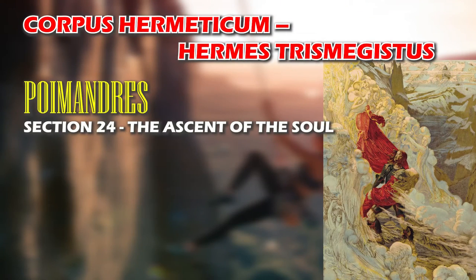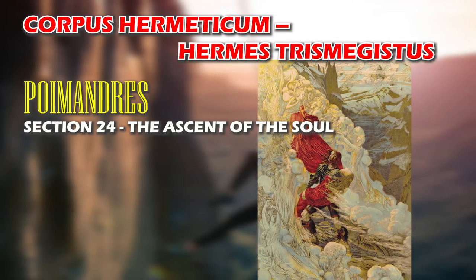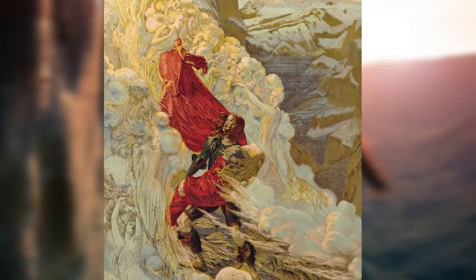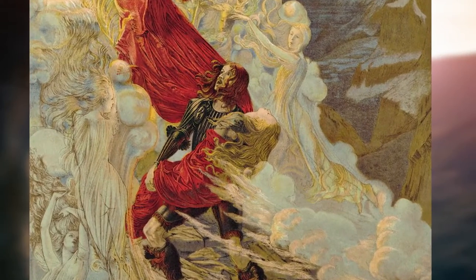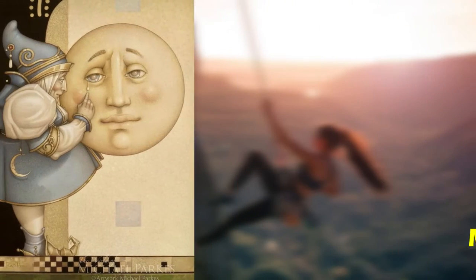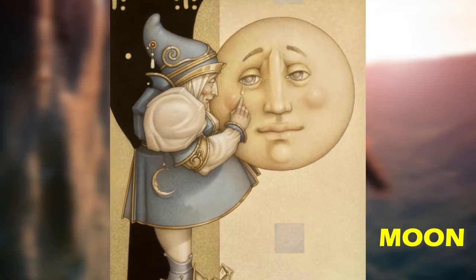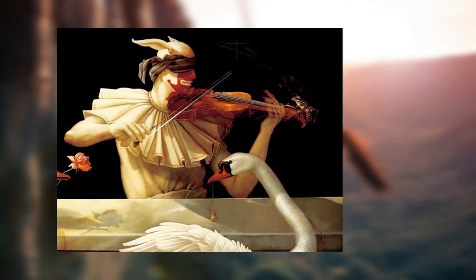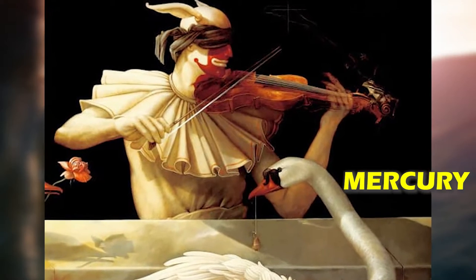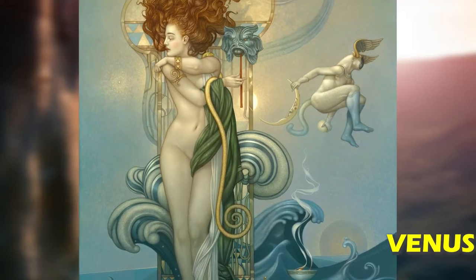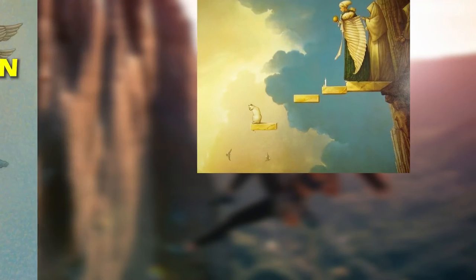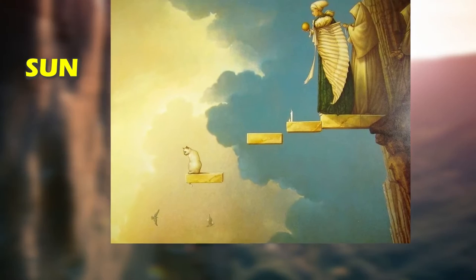Corpus Hermeticum, Hermes Trismegistus, Poemandres, section 24, The Ascent of the Soul: And thus it is that man rises thereafter through the harmony, that is, the harmonious spheres of the planets. To the first zone, Moon, he abandons the power of growth and decay. To the second, Mercury, return evil schemings, now de-energized. To the third, Venus, the illusions of desire, de-energized. To the fourth, Sun, the arrogance of power, de-energized.